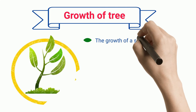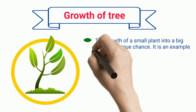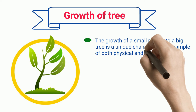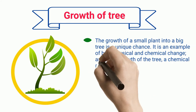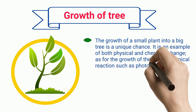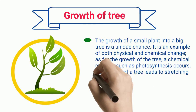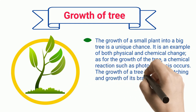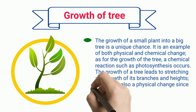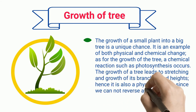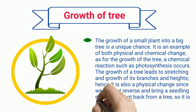The growth of a small plant into a big tree is a unique example. It is an example of both physical and chemical change. As for the growth of the tree, a chemical reaction such as photosynthesis occurs. The growth of a tree leads to stretching and growth of its branches and height. Hence, it is also a physical change. Since we cannot reverse and bring a seedling or a small plant back from a tree, it is an irreversible change.